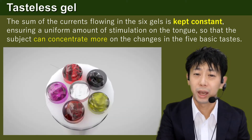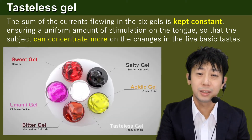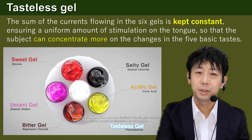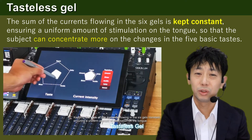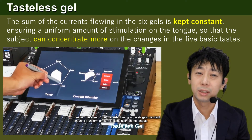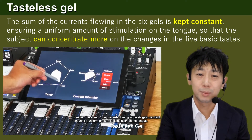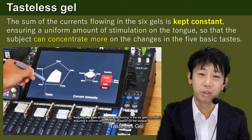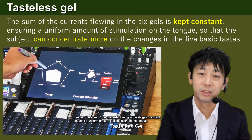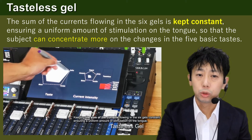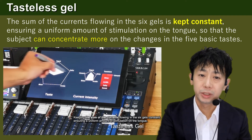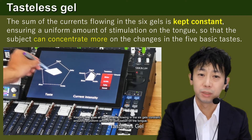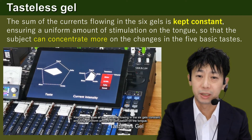Therefore, I decided to add a tasteless gel. The sum of the currents flowing in the six gels is kept constant, ensuring a uniform amount of stimulation of the tongue so that the subjects can concentrate more on the changes in the five basic tastes. To control the amount of current to each gel, I adjusted the variable resistance using moving faders on a digital mixer.